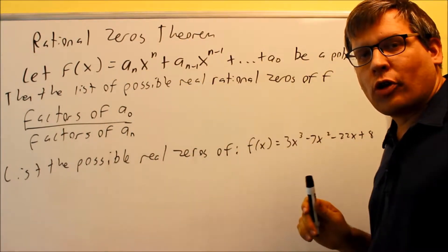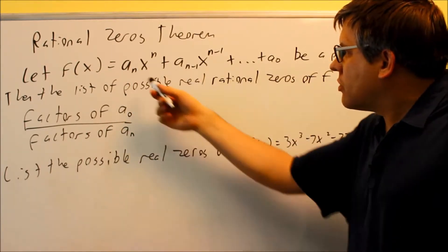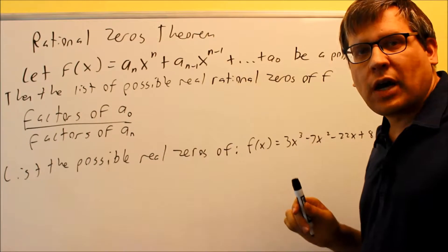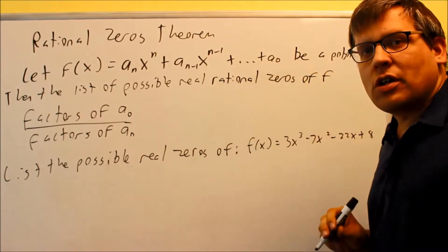This is the same formula we had before when we graphed the polynomials. a sub n is the coefficient that comes in front of the x with the highest power, and a of 0 is the last number that's not connected to any variable.